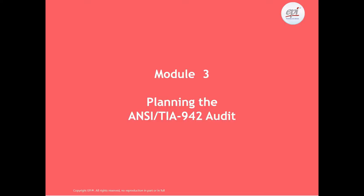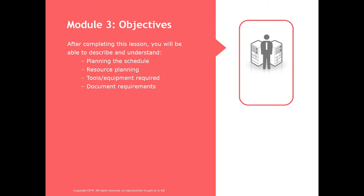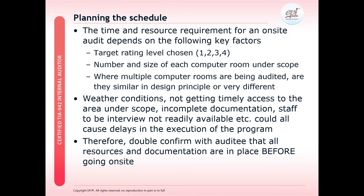Under Module 3 of the training, we will look at how to plan the ANSI TIA 942 audit programme. The objectives of Module 3 are: first, planning the schedule with the auditee; second, looking at resources required to undertake the programme; third, looking at the various tools and equipment that may be required; and fourth, various requirements around documentation and records.